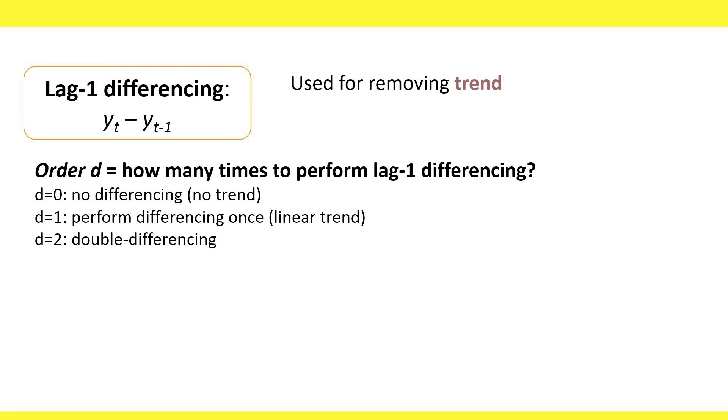Let's look more closely at the differencing procedure in ARIMA. We use lag one differencing to remove trend. The parameter D in ARIMA PDQ tells us how many times to apply the lag one differencing. D equals zero means no differencing, D equals one means differencing once at lag one, and D equals two means double differencing. After differencing the original series at lag one, we again difference the difference series.